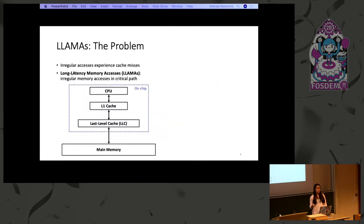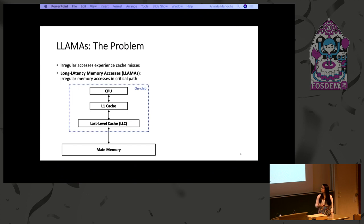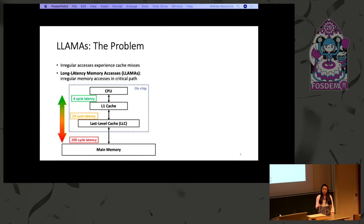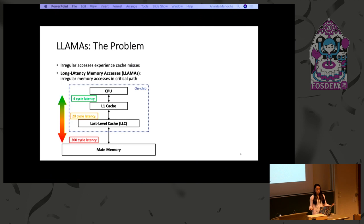So why are irregular memory accesses problematic? Modern memory hierarchies are composed of multiple caches, and caches are designed to store frequently accessed data in contiguous blocks. When your memory accesses are irregular, caches are not amenable to these accesses. As we traverse the memory hierarchy and miss at each cache level, we eventually go off-chip to main memory. The update-neighbors function that performed the irregular memory accesses was inside a nested loop, so it occurred very frequently. We define irregular memory accesses that occur frequently as LLAMAs — that is our acronym for them.